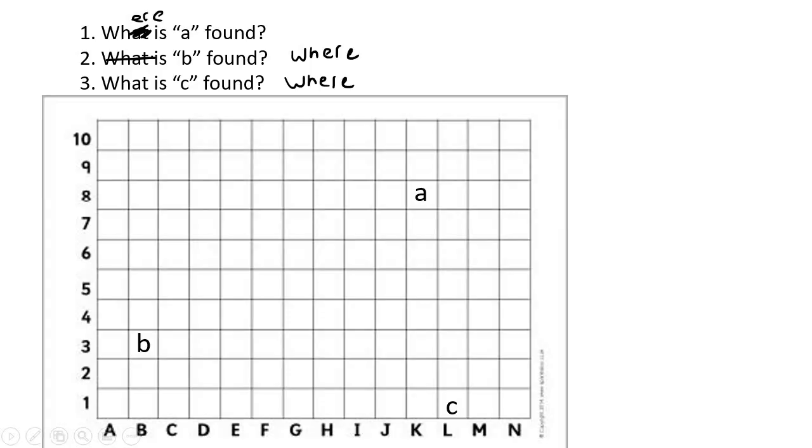So where is A found? If we go to A, now you might say, Kevin, there's A. Yeah, but I specifically meant the little a. So there's A over there. So if you look there, it's in row eight and column K, so you'd say K8.